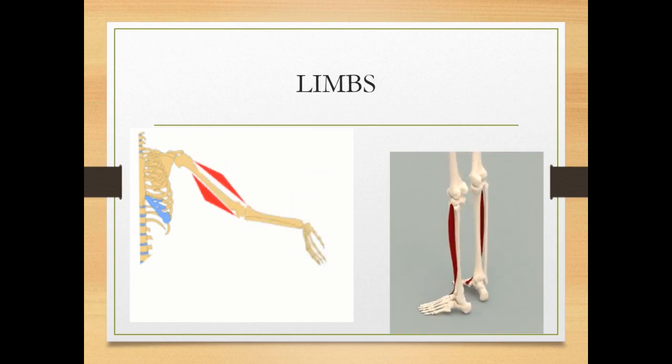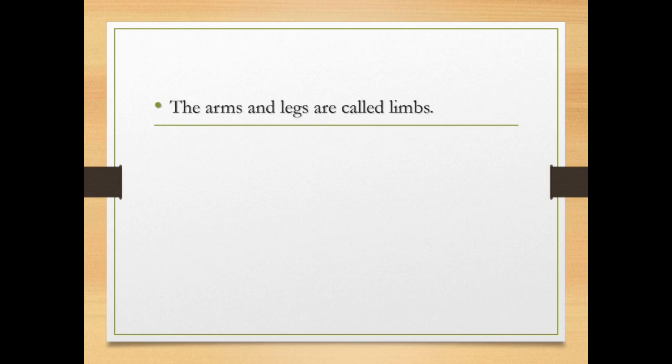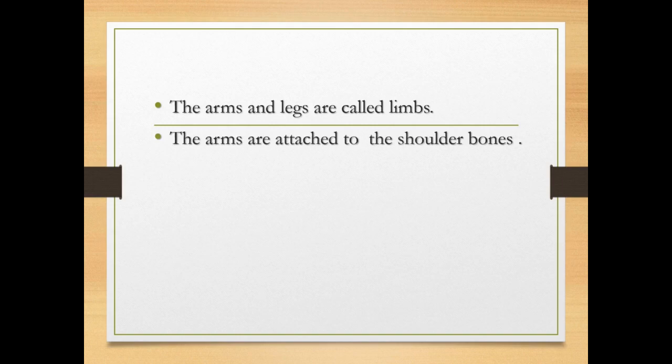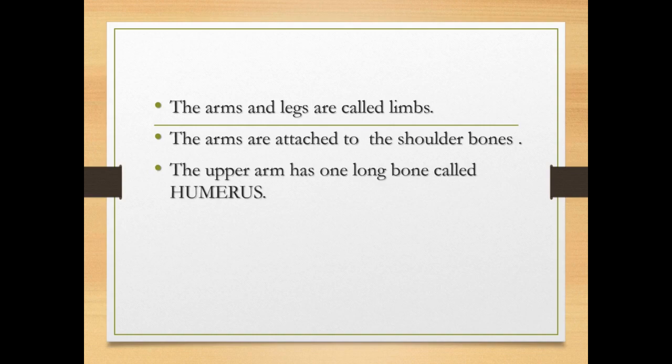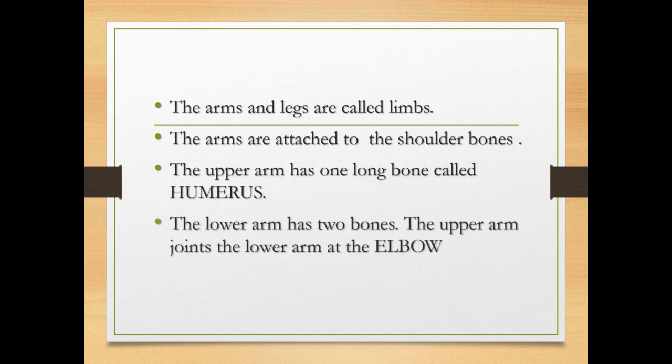What are limbs? The arms and legs are called limbs. The arms are attached to the shoulder bones. The upper arm has one long bone called the humerus. The lower arm has two bones. The upper arm joins the lower arm at the elbow.